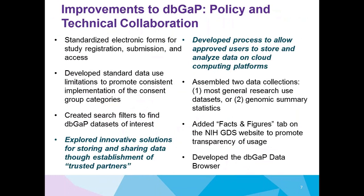There have been several improvements to DbGAP over the years, and this is really the policy and technical collaboration. Just because an improvement is made doesn't mean the policy is necessarily separated from that — we have to work very closely together to move everything forward. We've standardized forms, developed standard data use limitations to promote consistent implementation of consent group categories, created search filters, assembled data collections, and added facts and figures for transparency. We've also explored innovative solutions for storing and sharing of data through the establishment of trusted partners, and developed a process to allow approved users to store and analyze data on a cloud computing platform.